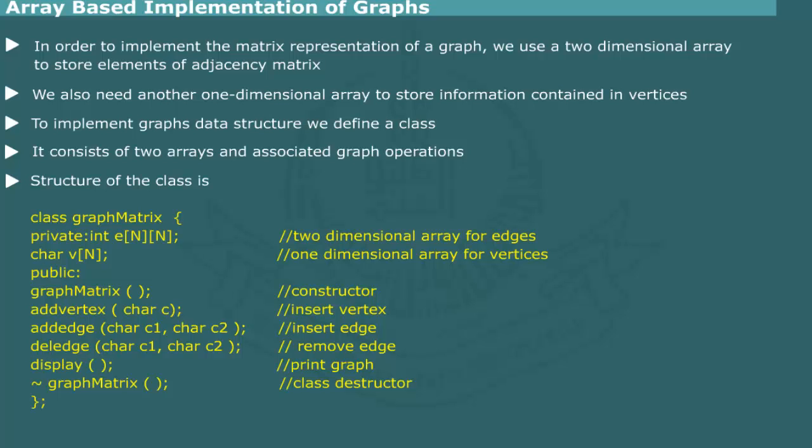It is assumed that vertices store single characters. The edges are represented by an adjacency matrix. The actual codes for the class methods are given in the demonstration.